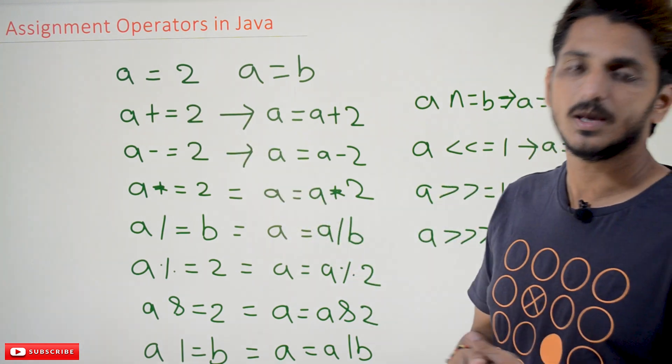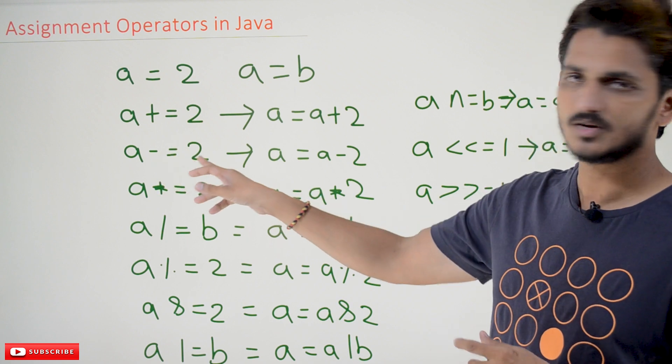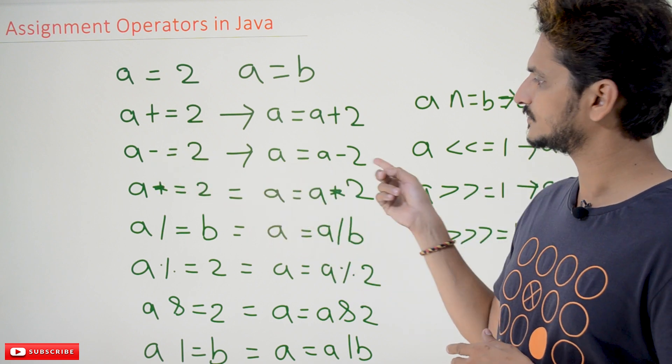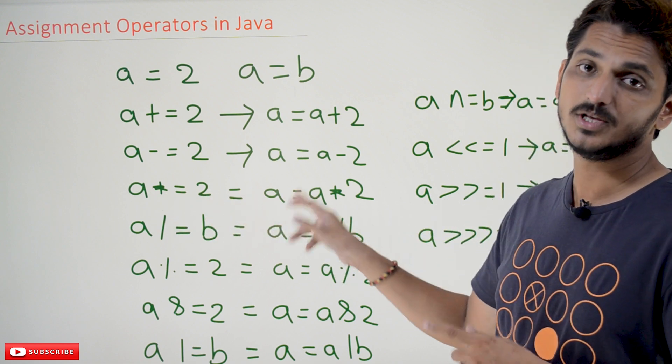Instead of writing this, you can write it as a shortcut as a plus equal to 2. Similarly, a minus equal to 2 means a equal to a minus 2. Similarly, a star equal to 2 means a is equal to a multiplied by 2.